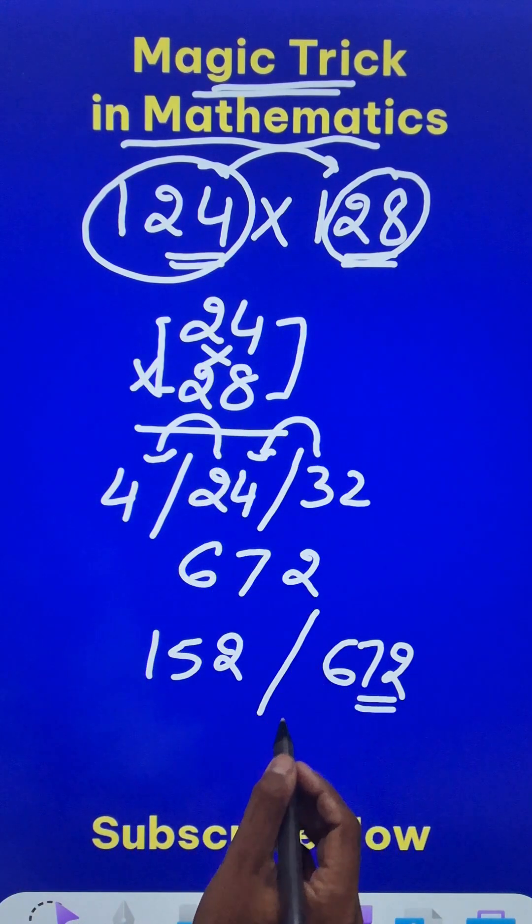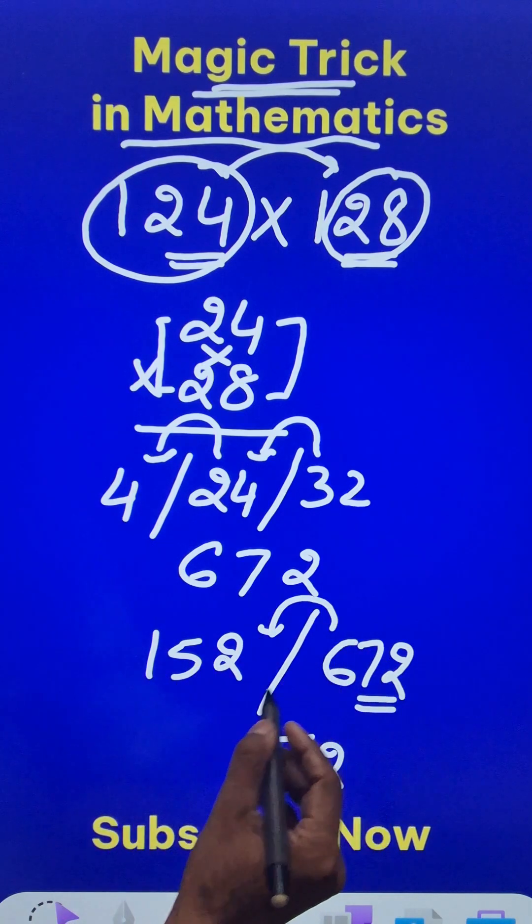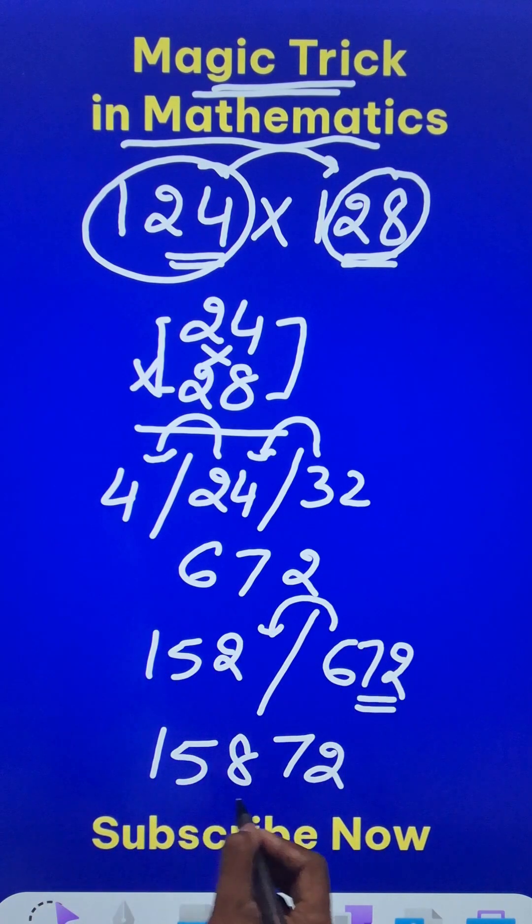And now retain the last two digits, you get 72 and carry forward this number 6. So 152 plus 6 is 158 and that gives us the product of these two three-digit numbers.